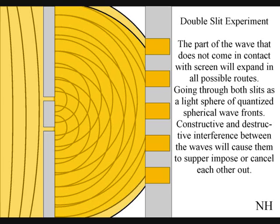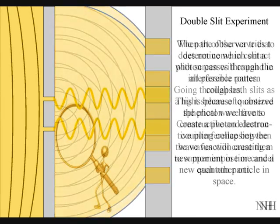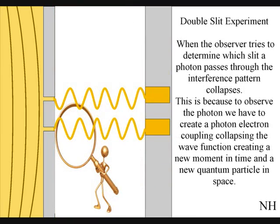When the observer turns on a detector to determine which slit a photon passes through, the interference pattern will collapse. This is because to observe the photon, we have to create a photon-electron coupling, collapsing each wave front into a new quantum particle that will have its own position in space and time.